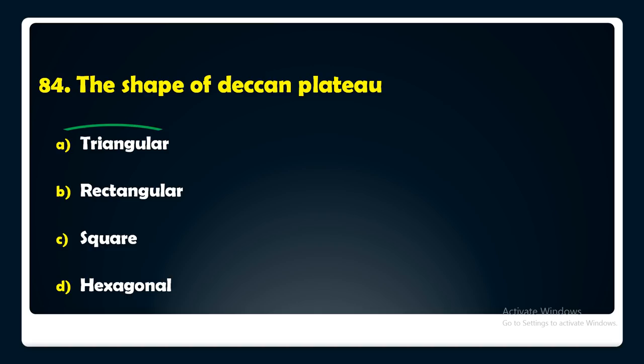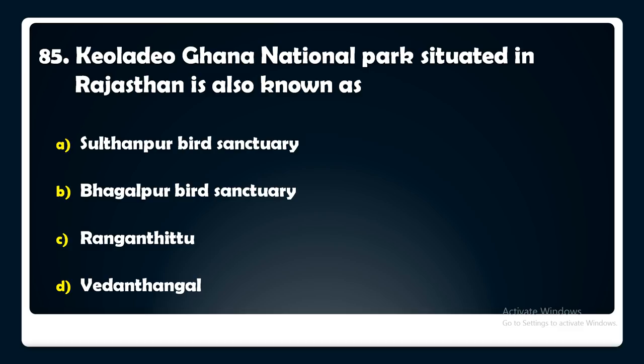Keoladeo Ghana National Park, situated in Rajasthan, is also known as — Sultanpur Bird Sanctuary, Bharatpur Bird Sanctuary, Ranganathittu, or Vedanthangal? The answer is: Keoladeo Ghana National Park is also known as Bharatpur Bird Sanctuary.